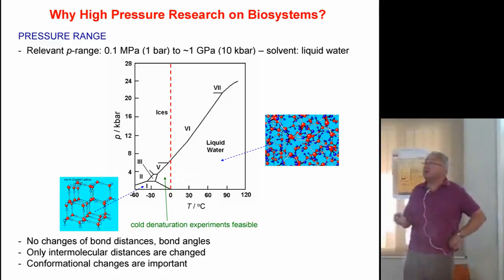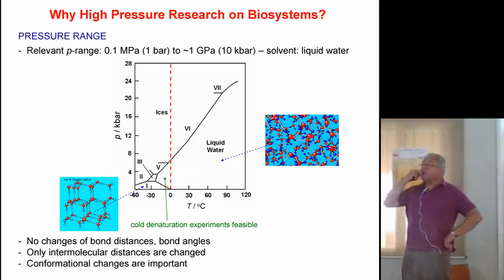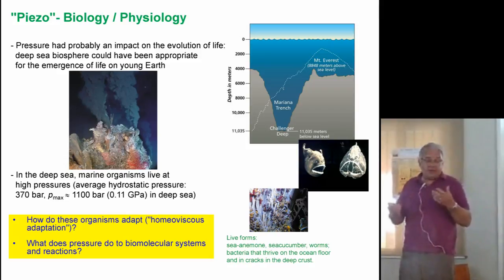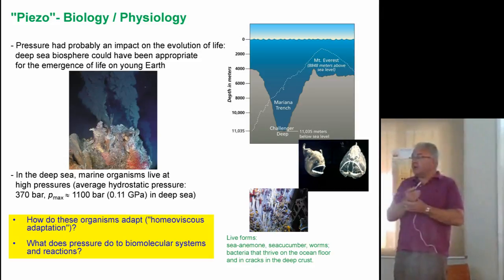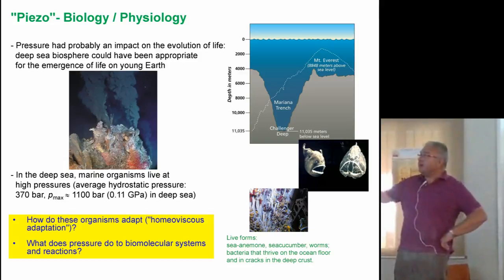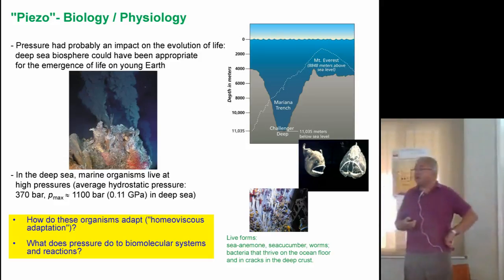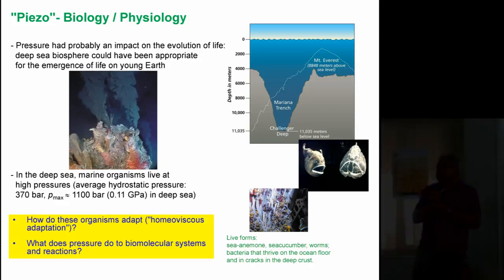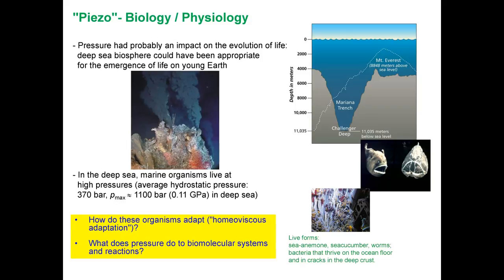Why study pressure in biomolecular systems? From a biological point of view, pressure might have an impact on the evolution of life — it might have started in the deep sea under rather high pressure conditions, for example in black smoker areas. In the deep sea, the average pressure is around 400 bar, and the maximum pressure in the Mariana Trench is about one kilobar (0.1 GPa). Even under these conditions, many microorganisms thrive, so the question is how do these organisms adapt to the hostile conditions of low temperature and high pressure — which is called homeoviscous adaptation.